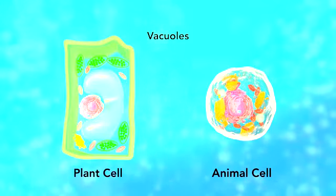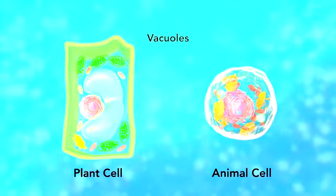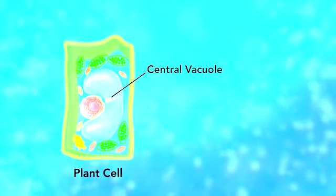Vacuoles are sac-like structures that store different materials. Here in this plant cell, the central vacuole stores water.